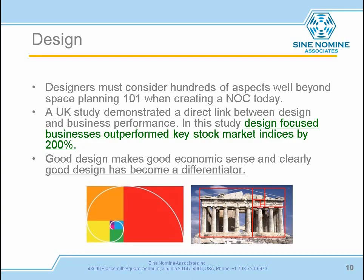A designer has to consider hundreds of aspects, well beyond normal space planning. Typically your facilities group, if they haven't designed a NOC, are going to take an approach that could be incorrect — things such as adding active noise masking when really you need passive acoustic treatments. We go back through the golden ratio, the Fibonacci spiral, we look at color empathy, color balance, and try to add that extra little bit that makes the room feel comfortable. Especially when you're working a 12-hour shift, the space has to be one of the primary tools being used — and that's the physical design of it.